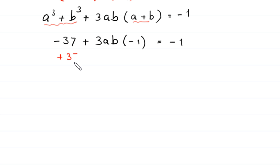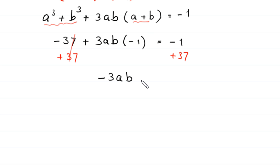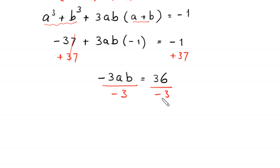We add 37 to both sides of this equation. So the 37 cancels out, and 3ab times negative 1 becomes negative 3ab is equal to negative 1 plus 37, which is 36. Dividing both sides by negative 3, we get the value of a times b is equal to negative 12.